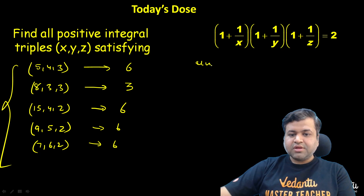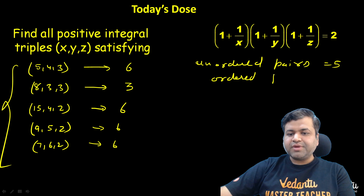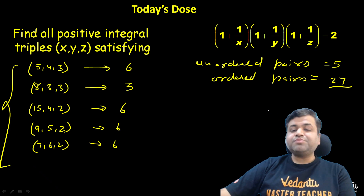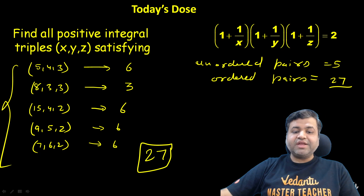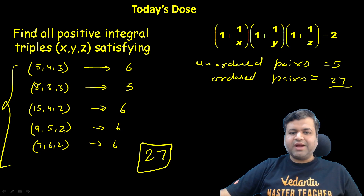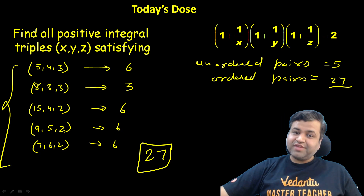So the unordered pairs are: (5,4,3), (8,3,3), (15,4,2), (9,5,2), and (7,6,2) — that's 5 unordered pairs. For ordered triples: (5,4,3) gives 6 permutations, (8,3,3) gives 3, and (15,4,2), (9,5,2), (7,6,2) each give 6 — totalling 6+3+6+6+6 = 27 ordered triples. I hope you understand this. We'll meet in the next session with a new question. Take good care of yourself. Thank you, bye bye.